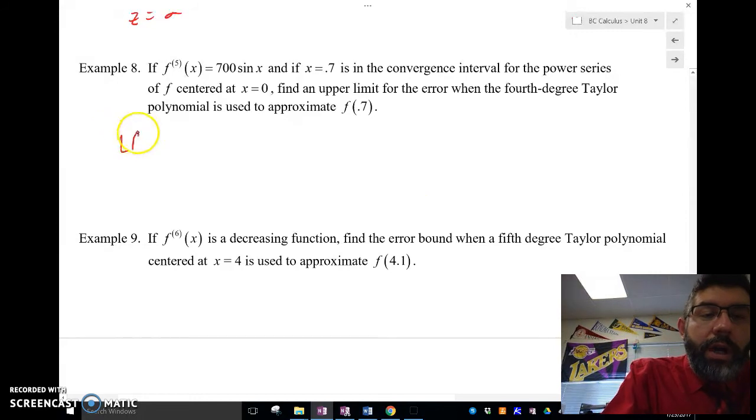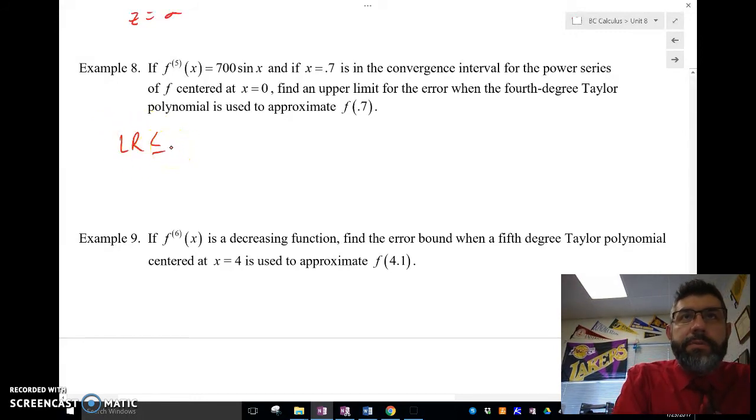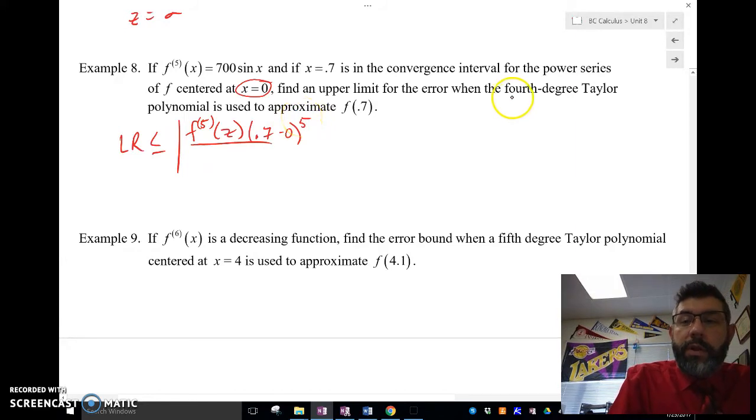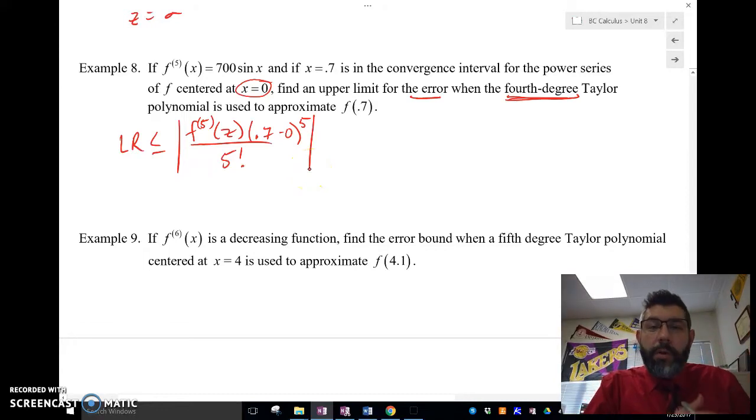Our Lagrange remainder is going to be less than or equal to the absolute value of the fifth derivative, f5 of z. And x, now it's centered at 0, so x is 0.7 minus 0, raised to the fifth power, because we're doing a fourth degree. We want the error for a fourth degree polynomial, so we're going to go to the next one. We use the fourth degree, then we're going to go to the fifth one. The fifth degree is going to look like this, over 5 factorial. Again, we estimated using the fourth degree, so we're looking for the error. And when we're looking for the error, we're going to use the next term, which is the fifth, which is with the fifth power.